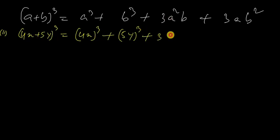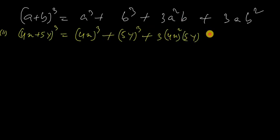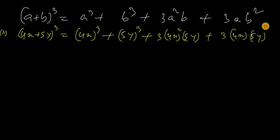Expanding: A is 4x whole cube, plus B is 5y whole cube, plus 3 times A squared times B, plus 3 times A times B squared. Let's simplify.